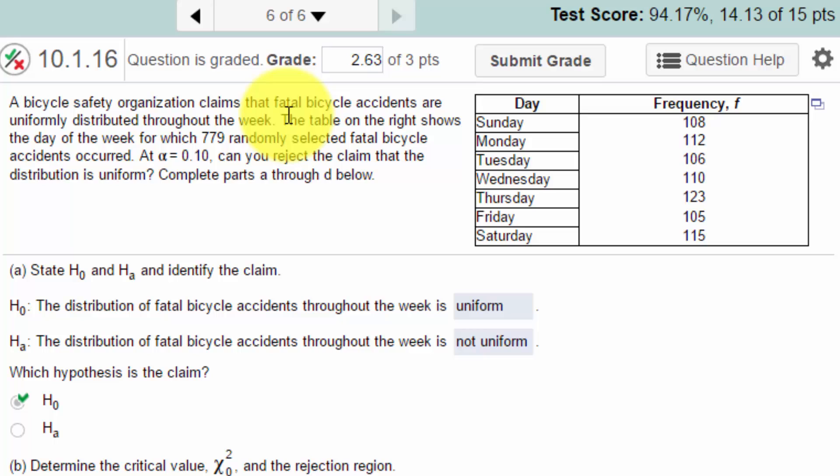Okay, that tells me that they're expecting a pattern that every day would have the same number of accidents as any other day in a week. They say that in this week there were 779 randomly selected fatal bicycle accidents and at alpha point one can you reject the claim the distribution is uniform.